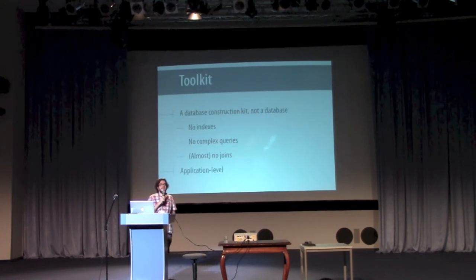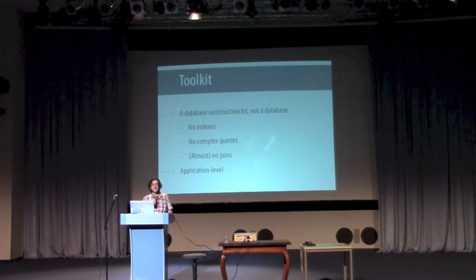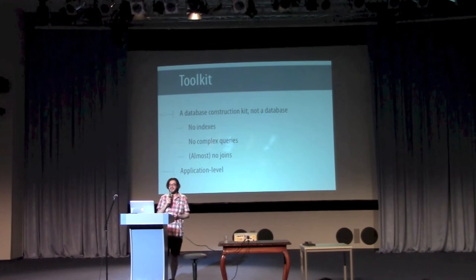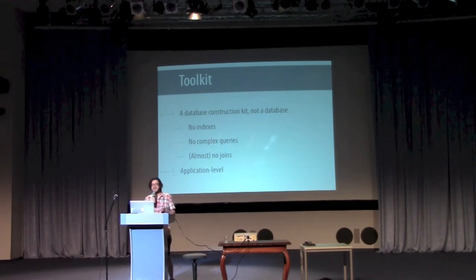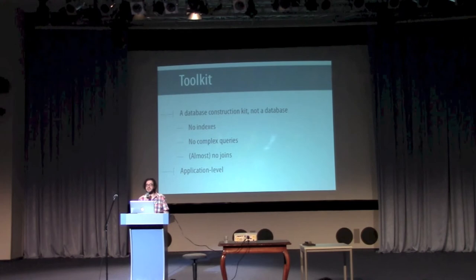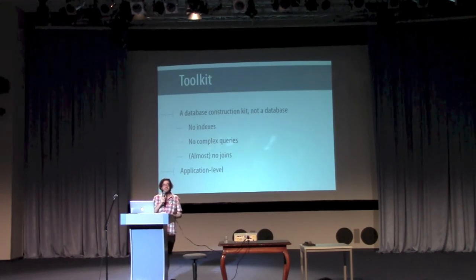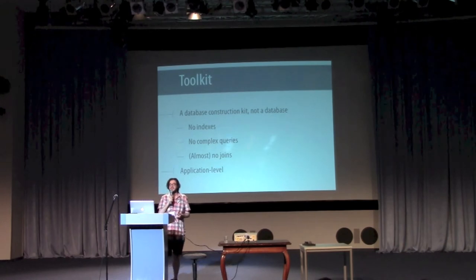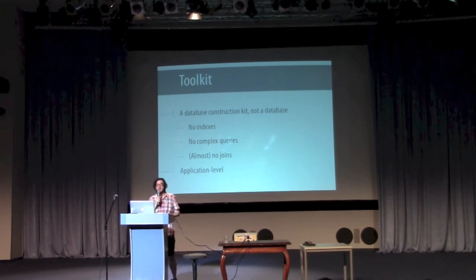We'll see later on that there are some fairly easy ways to deal with that restriction in practice, especially since the bottleneck for high-throughput applications is often memory usage or network bandwidth rather than CPU speed per se. Another useful way to think about Redis is that rather than being a database itself, it's more like a database construction kit. It doesn't have indexing or aggregate queries or general-purpose joins or other things you might expect from relational databases. That's not to say you can't do things like that, but you'll need to write application-level code to do some of the work.